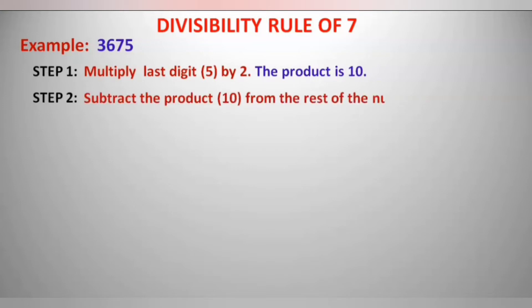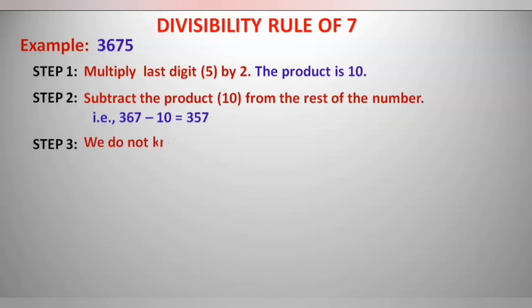The number is 3675, so the rest of the number after removing 5 is 367. So 367 minus 10 gives 357. Now we don't know if 357 is divisible by 7 or not.